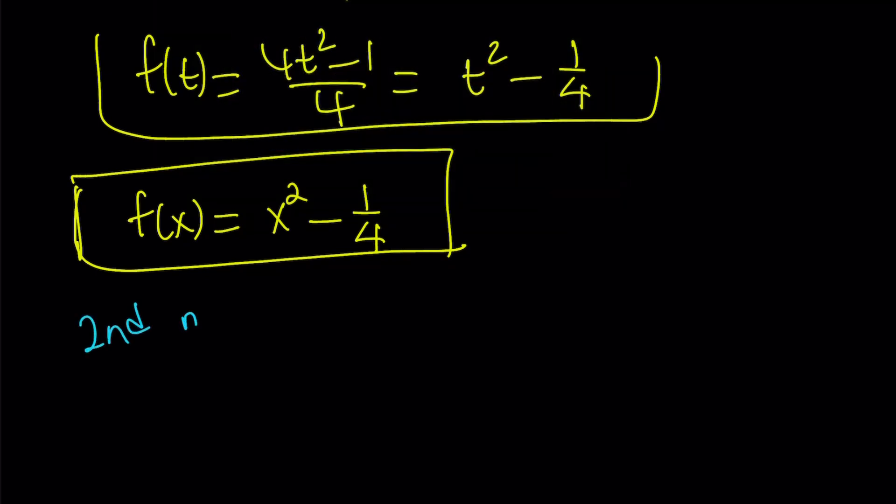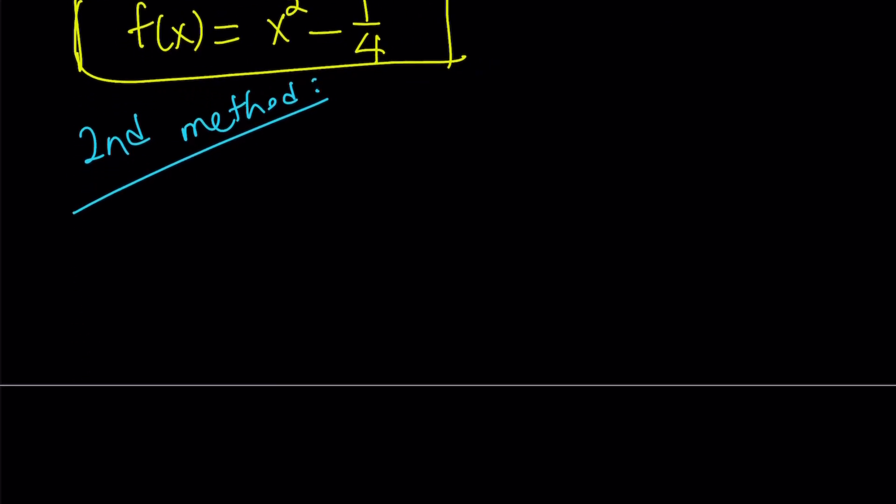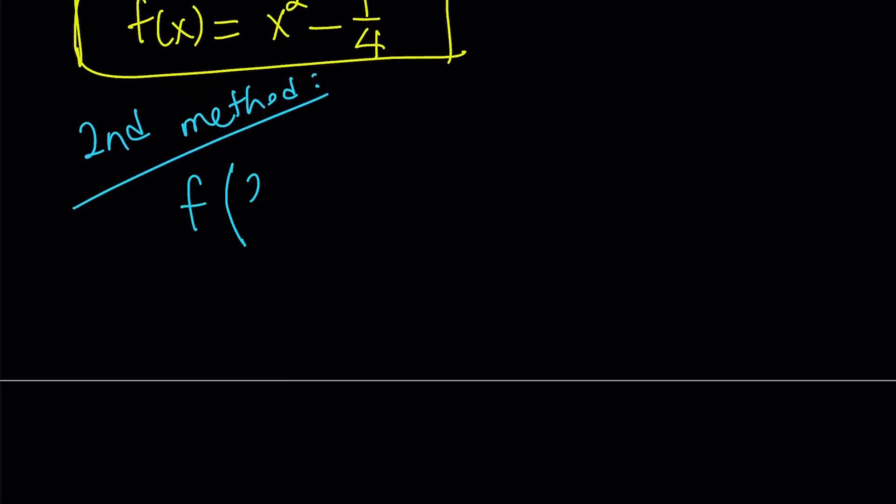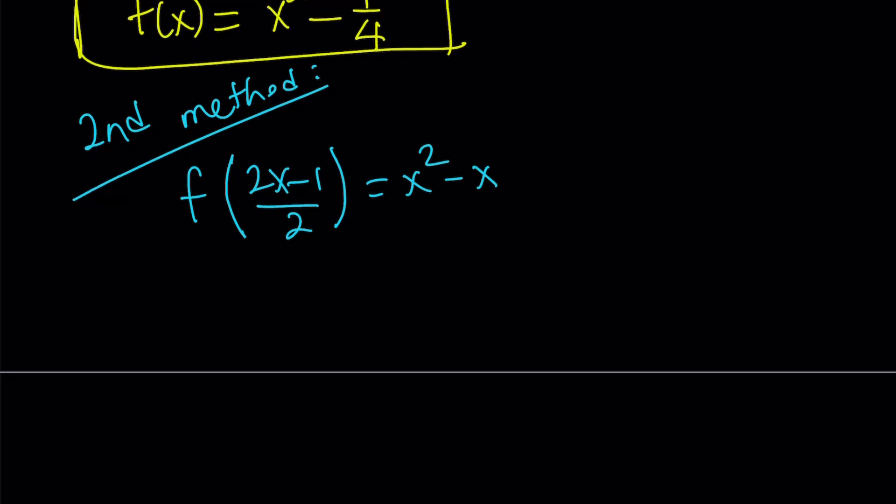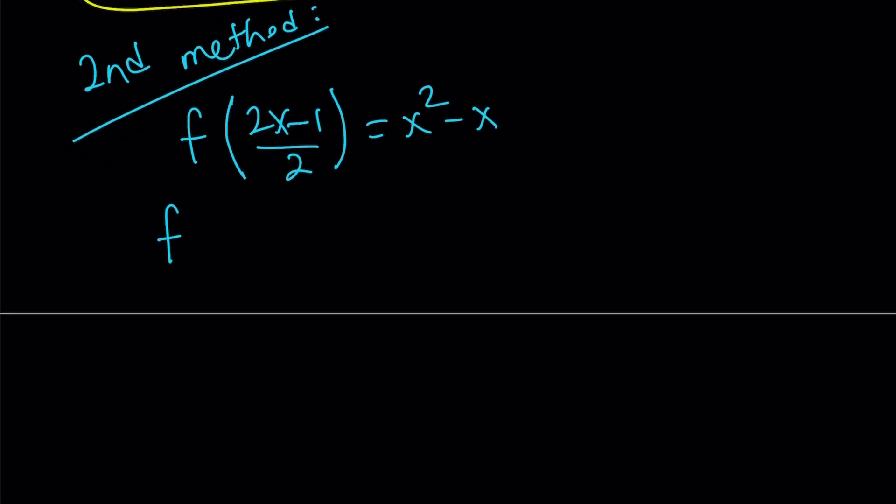Here's the second method. For the second method, let me rewrite the equation every time so you get to see the problem. Now, for the second method, I'm going to manipulate the right hand side a little bit and write it as 1 fourth times 4x squared minus 4x.